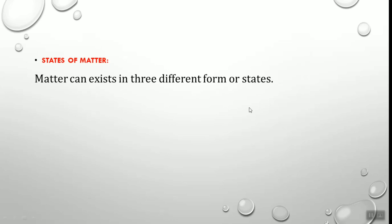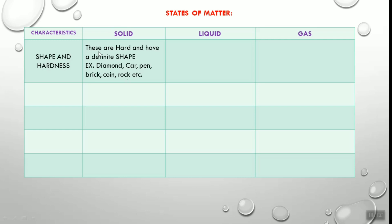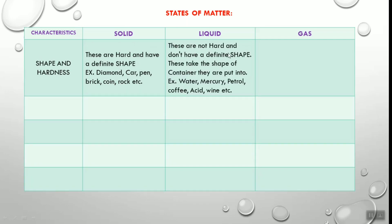Now, states of matter. Matter can exist in three different forms or states: solid, liquid, and gas. We will see the difference between solid, liquid, and gas according to their characteristics. The first characteristic is shape and hardness. Solids are hard and have a definite shape — examples include diamond, car, bricks, coin, and rock. Liquids are not hard and don't have a definite shape because they take the shape of the container they are put in.